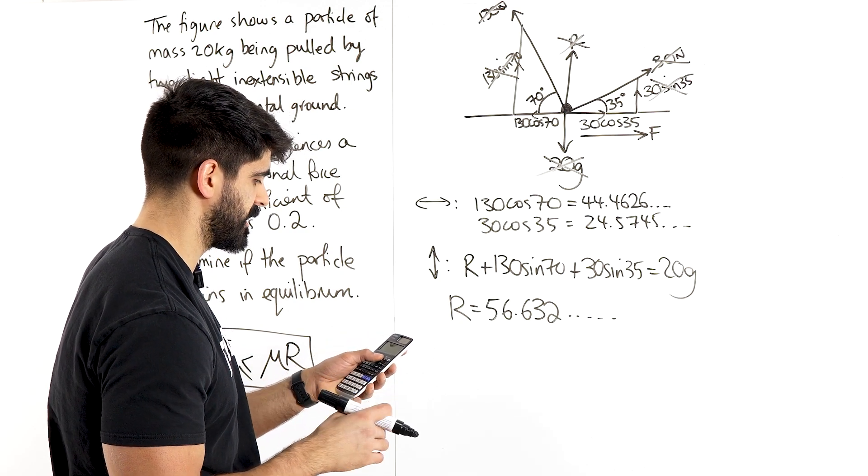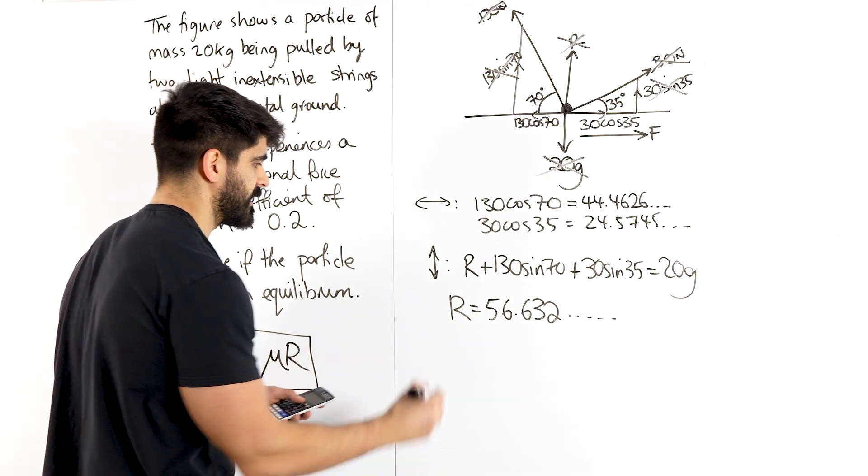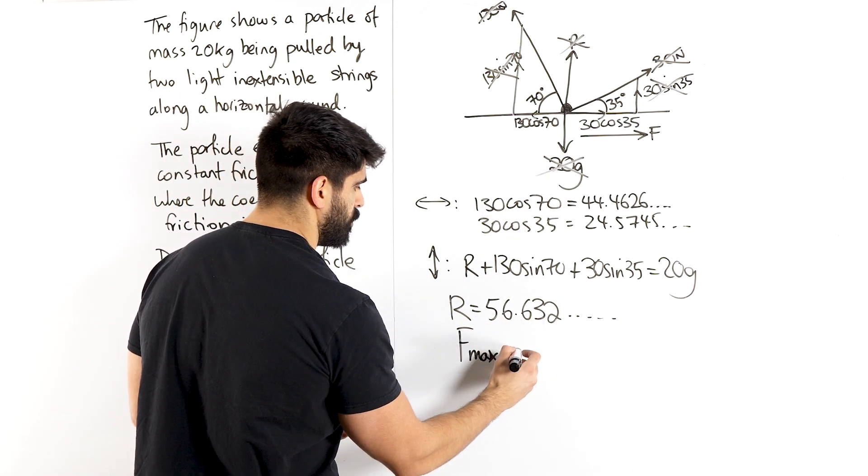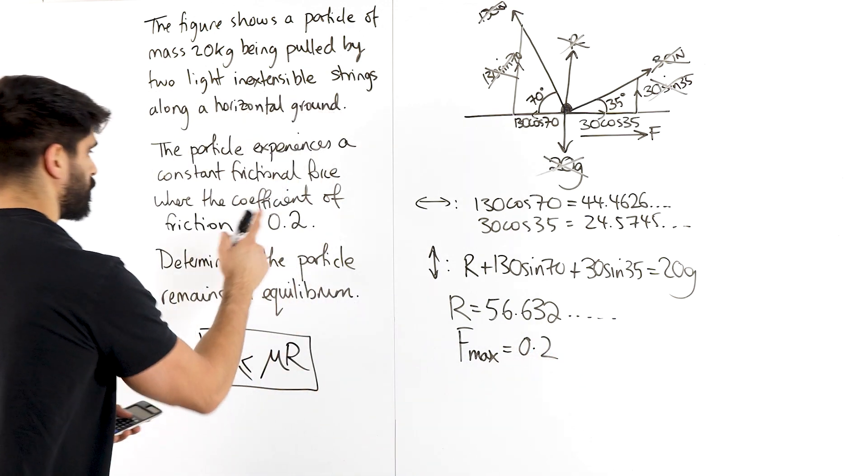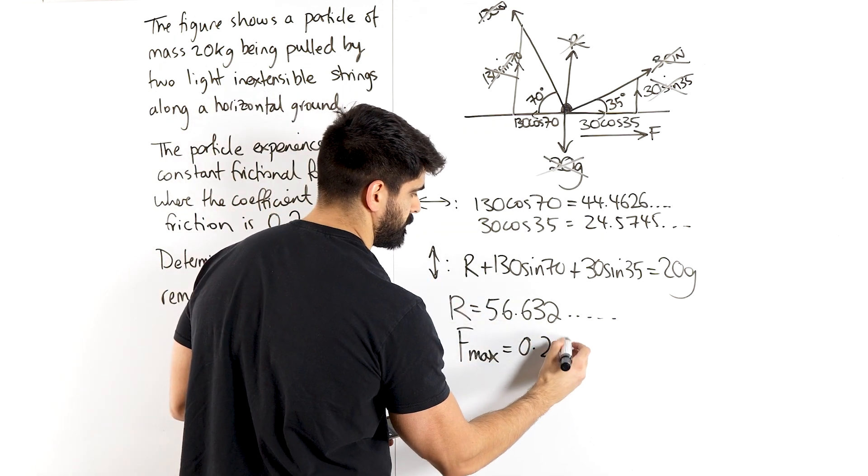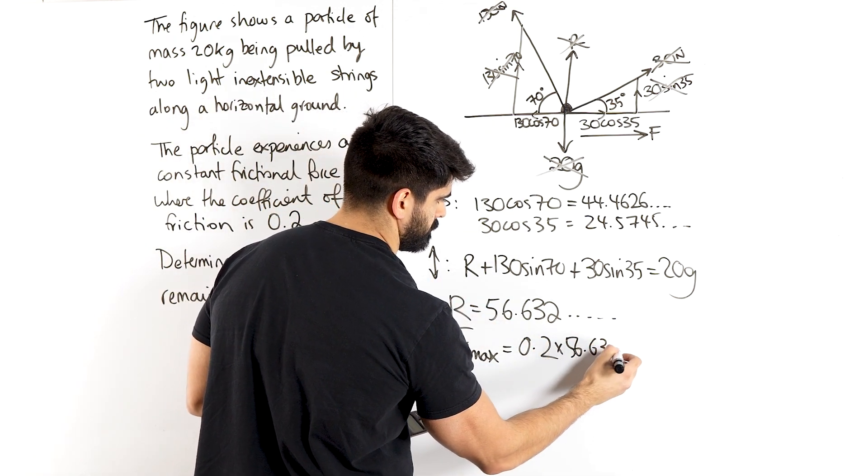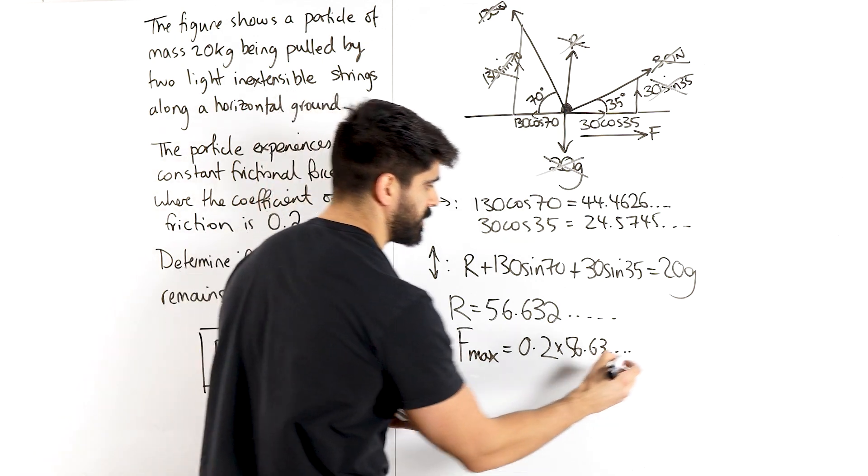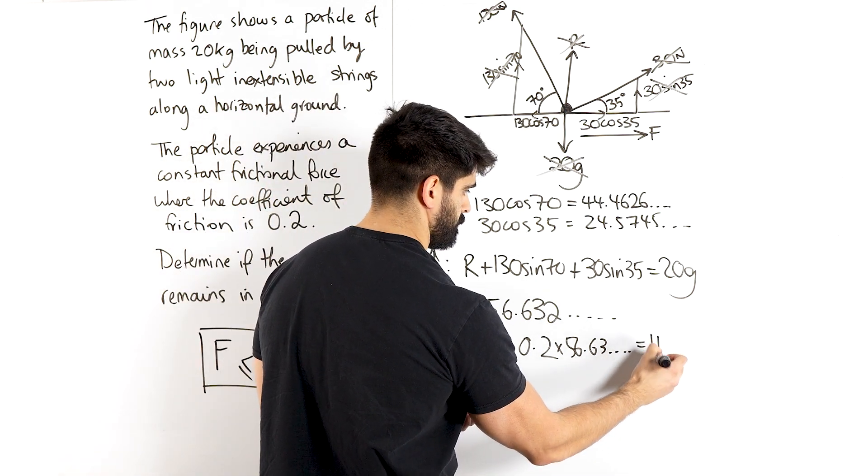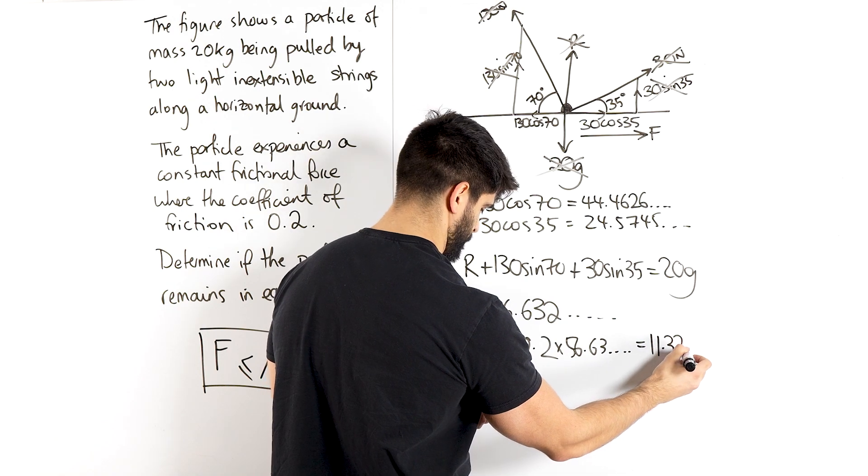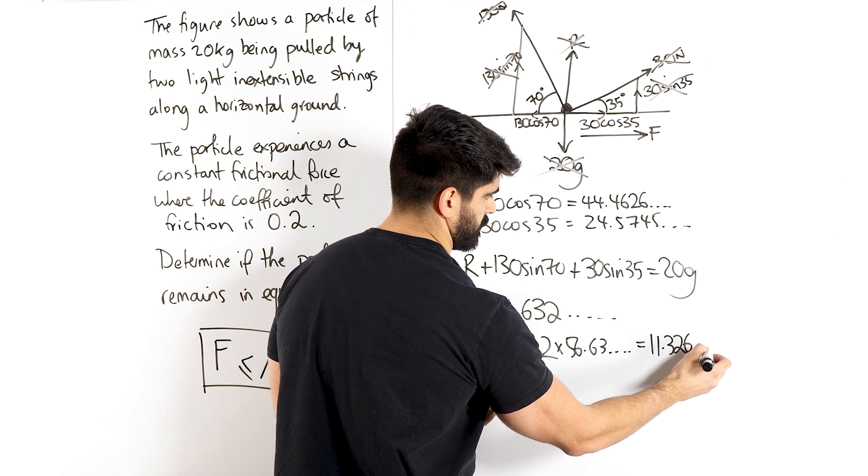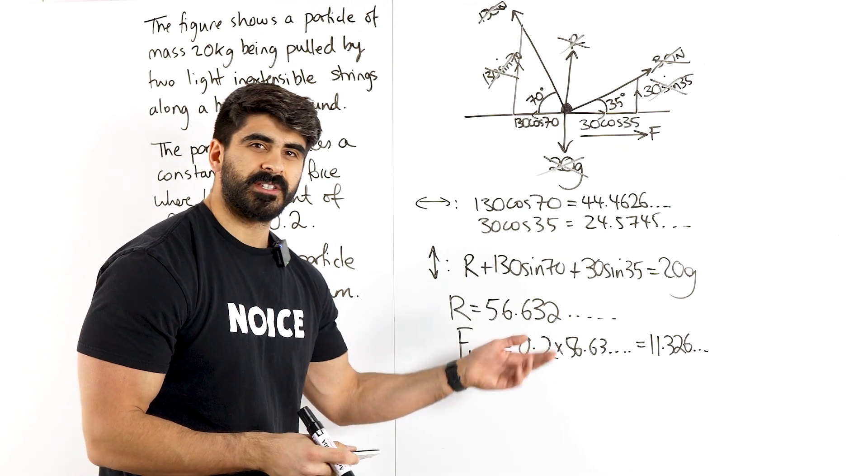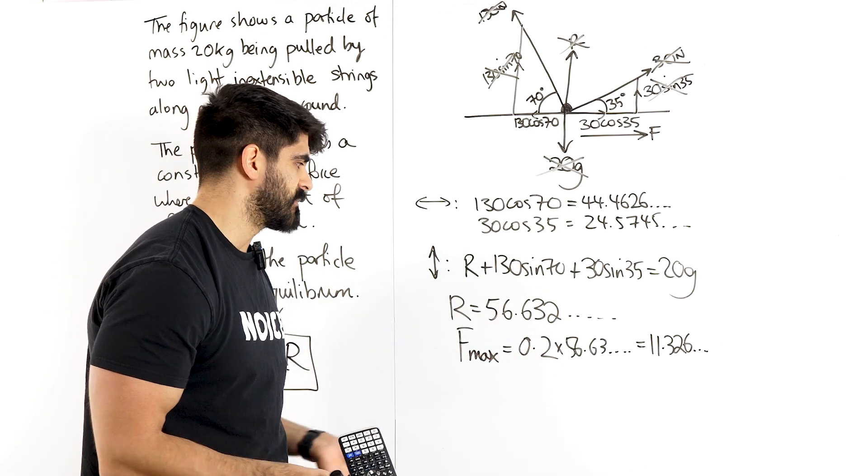So now we can calculate F max is going to be mu, which is 0.2, given in the question, times this value. So times that by 0.2, I get 11.326 dot dot dot. Obviously we use gravity to be 9.8. We can round these values. That's not a problem.